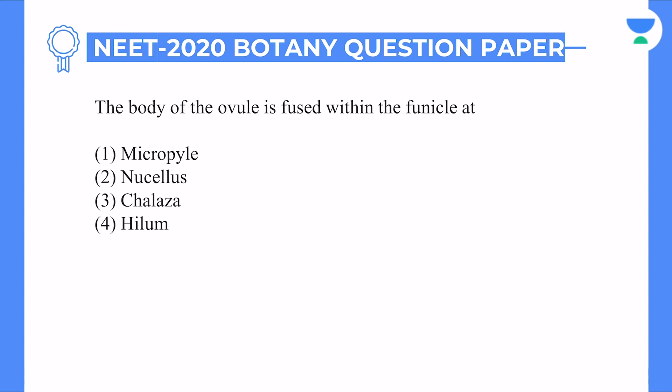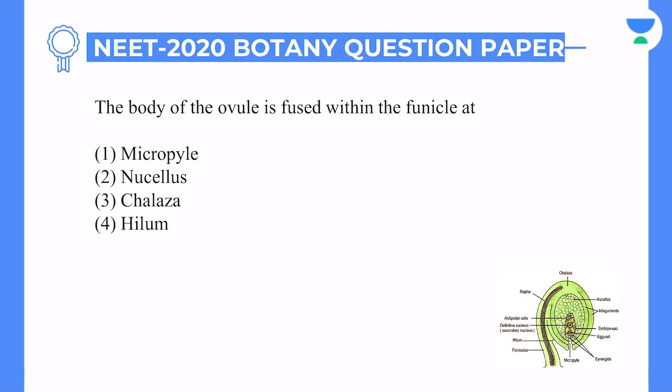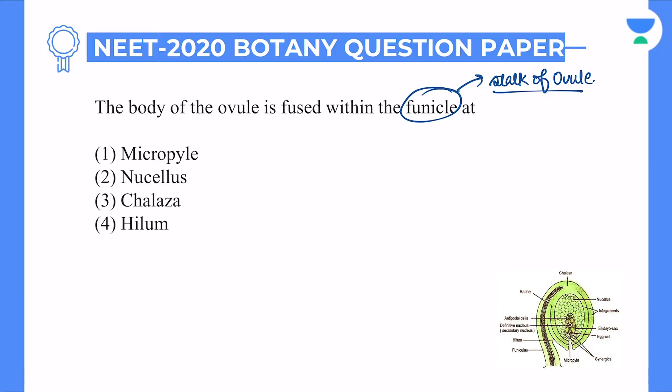Next: the body of the ovule is fused within the funicle at — the funicle is called the stalk of the ovule. The ovule's main body is attached at a point which we call the hilum. The wrist part where ovule meets funicle is known as hilum. So the answer for this particular question will be option number four: hilum.